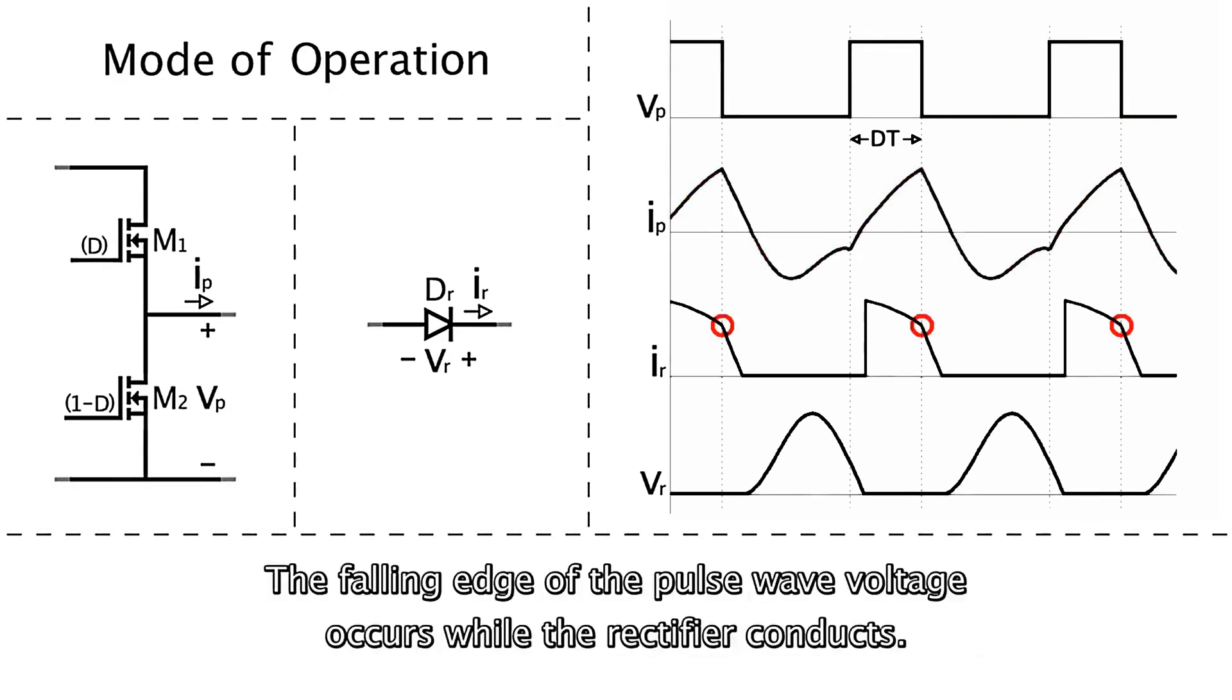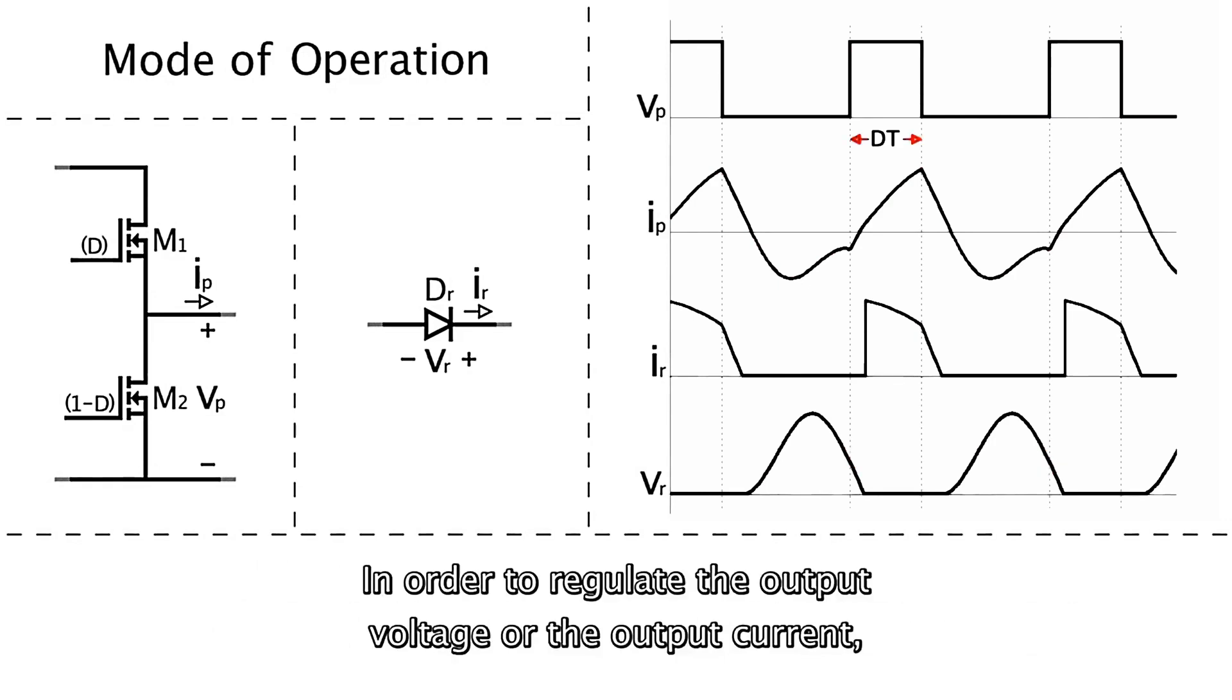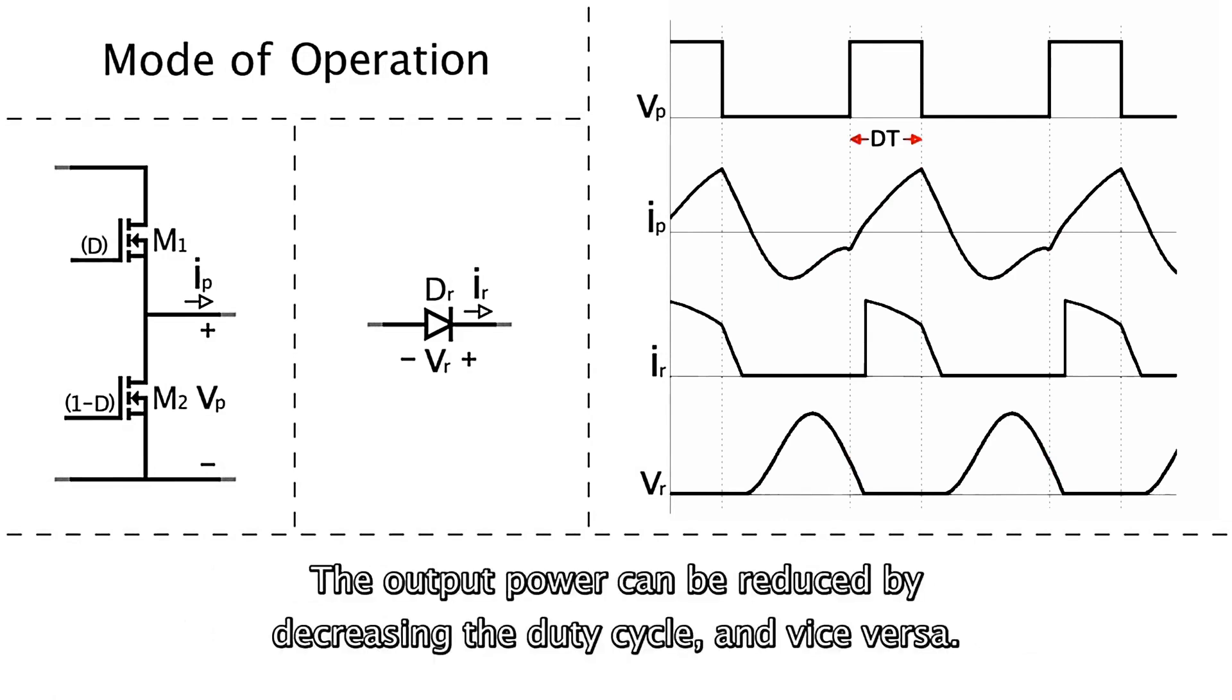The falling edge of the pulse-wave voltage occurs while the rectifier conducts. The rising edge occurs while the reverse voltage across the rectifier is resonantly falling from the ringing peak. In order to regulate the output voltage or the output current, the duty cycle of the pulse-wave voltage is varied while its period remains constant. The output power can be reduced by decreasing the duty cycle, and vice versa.